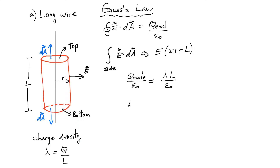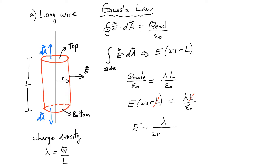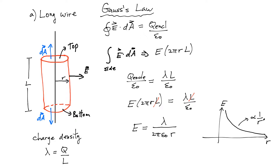Now you can put everything together. You're going to get E · 2πr · L equals lambda · L divided by epsilon zero. We can simplify — the length appears on both sides. At the end, what I'm left with is the electric field from this very long wire is simply the charge density lambda divided by 2π epsilon zero and r. And if it's a positive charge density, the electric field will point away from the wire; if negative, toward. The dependence on distance is a 1/r dependence. Plotting the electric field magnitude as a function of r, it's just a 1/r curve. That's applying Gauss's law to a long wire.